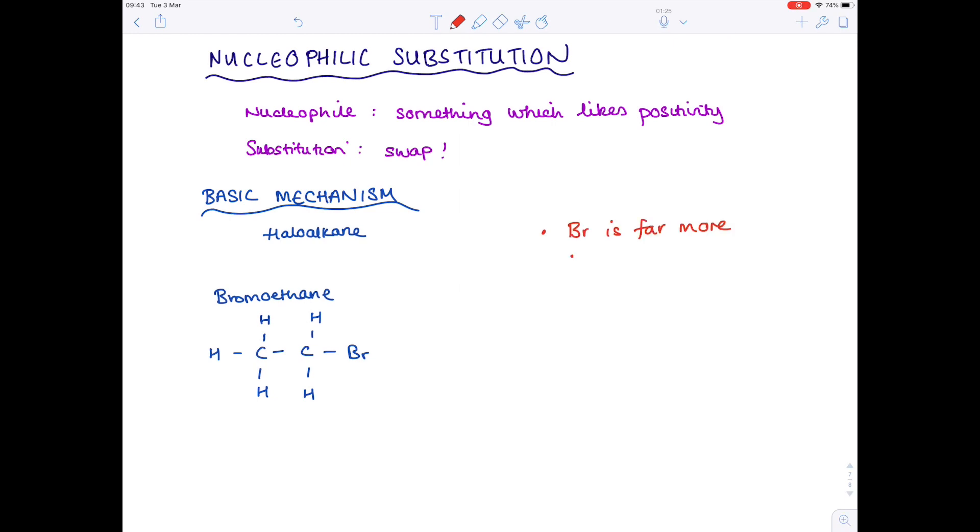Notice that bromine is far more electronegative than carbon. So that means that the bromine draws away those electrons within the bond, meaning that the electrons sit far closer to bromine compared with carbon. And then you end up with this situation where we have the C-Br bond with the bromine being delta negative, and the carbon being delta positive. So if we add that detail to the bromoethane, we know that our bromine is slightly negative, the carbon is slightly positive.